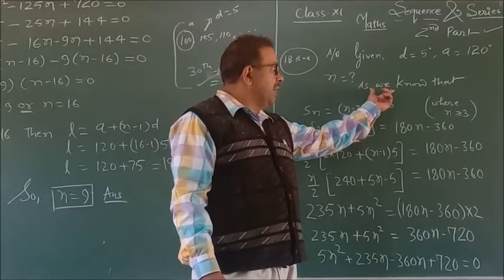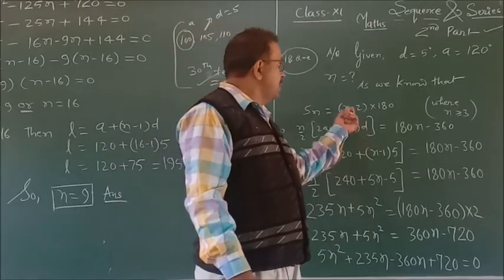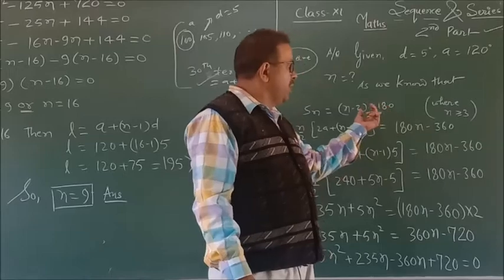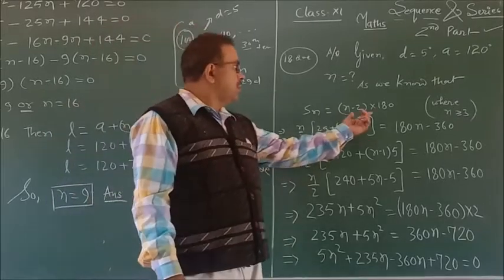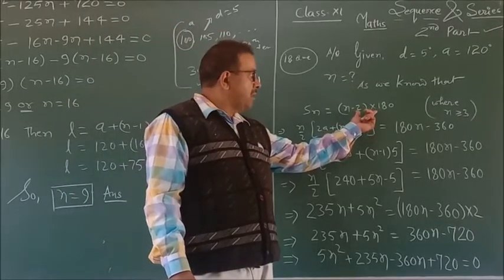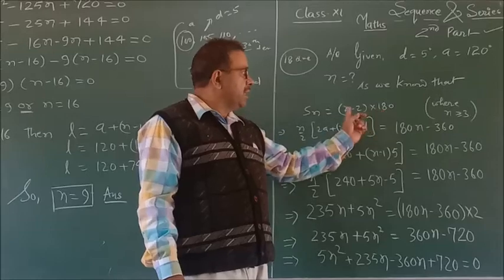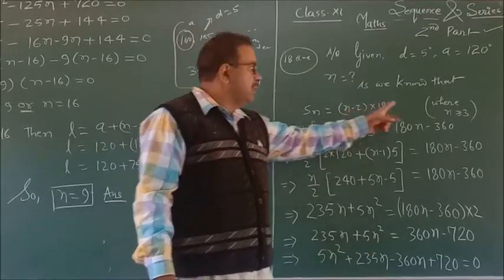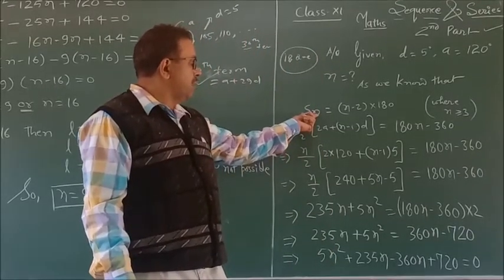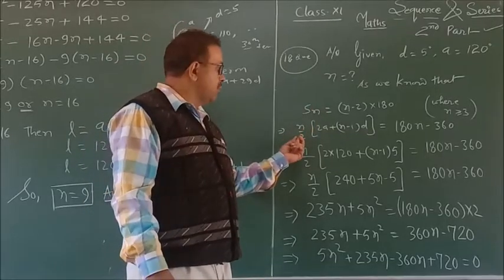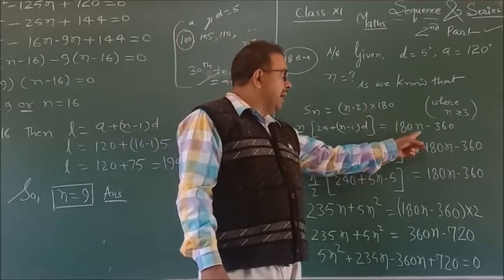As we know, the sum of all the angles of a given polygon is (n-2) × 180 degrees. We use this formula — you have already learned this in your previous classes. So SN is equal to (n-2) × 180 degrees, where n is the number of sides and n ≥ 3. With the help of arithmetic progressions, we also know that SN equals n/2 × [2a + (n-1)d] = 180n - 360.